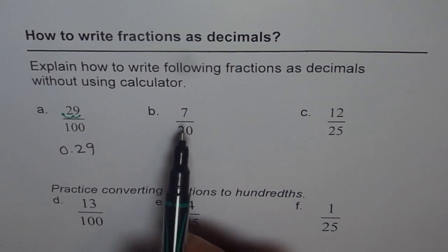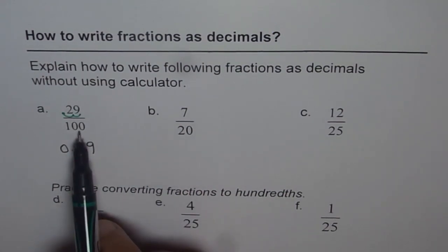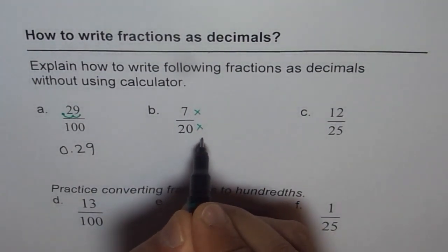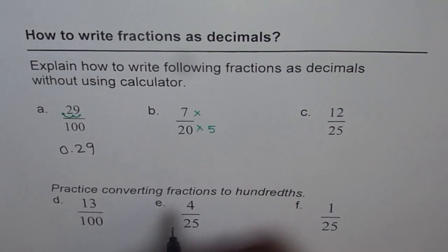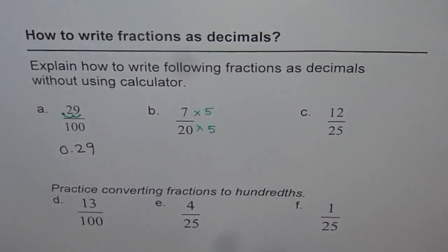Now let us see how to write 7 over 20 as a decimal number. So the trick is to convert 20 into 100. How can we do that? Let us multiply both by what? 20 times 5 is 100. Similarly, we multiply the numerator also by 5.